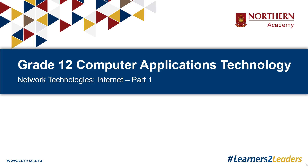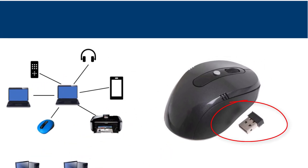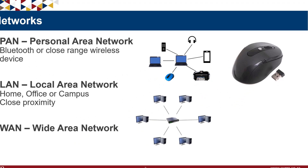Network technologies, specifically the internet — part one of two. To quickly recap, we get three types of network classifications. First, PAN or personal area network, which is normally Bluetooth devices or close-range wireless devices. Bluetooth lets you connect your headset, phone, or printer to your laptop. Close-range wireless devices like a mouse or keyboard use a dongle that works only with that specific device, typically at 2.4 GHz frequency.